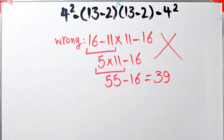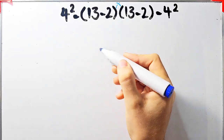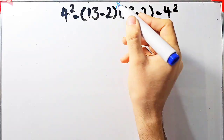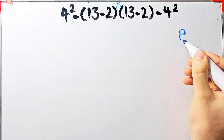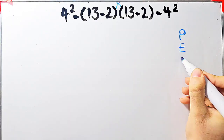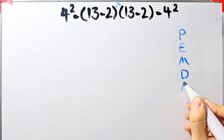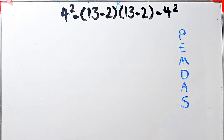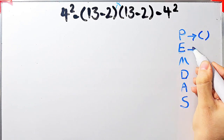Let's solve this question step by step together. In this question we have exponents, subtraction, parentheses, and multiplication. To solve this question we need to follow the PEMDAS rule. PEMDAS shows the priority of the mathematical operations, and if you don't pay attention to this rule you get the wrong answer. In this rule, P stands for parentheses, E stands for exponent.